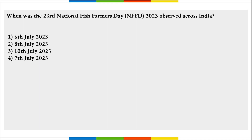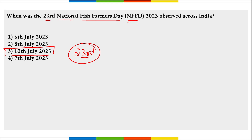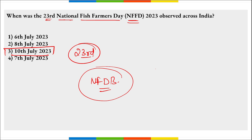When was the 23rd National Fish Farmers Day observed? On 10th of July, the 23rd edition of National Fish Farmers Day was observed to recognize the contributions of fish farmers, aquaculture industry professionals and other stakeholders toward the sustainable development of the fish sector. 10th July also marks the 17th edition of the National Fisheries Development Board Foundation Day.